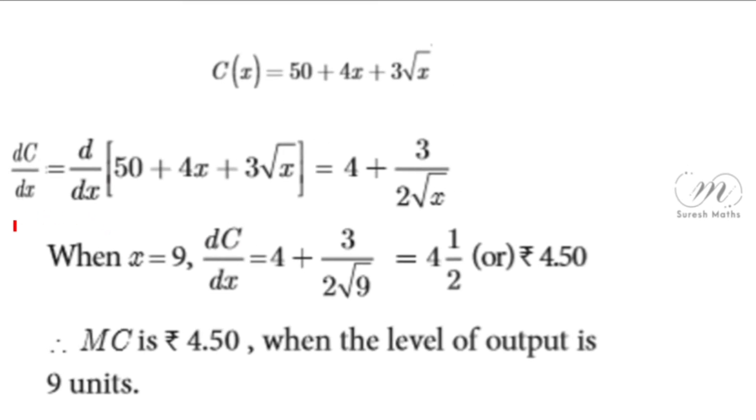So we solve dC/dx for the marginal cost function. The constant differentiates to 0, plus the derivative of 4x is 4, plus 3 is constant, then the derivative of √x is 1/(2√x). So the derivative of √x is 1/(2√x).